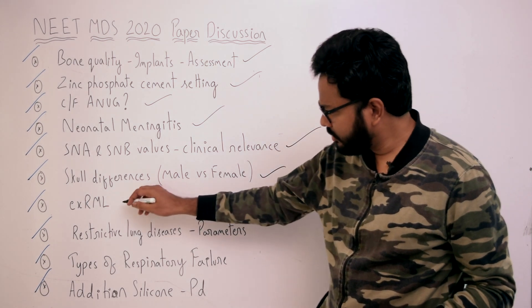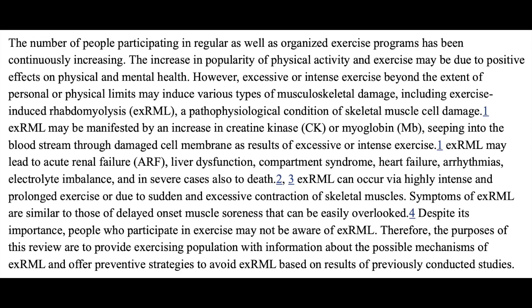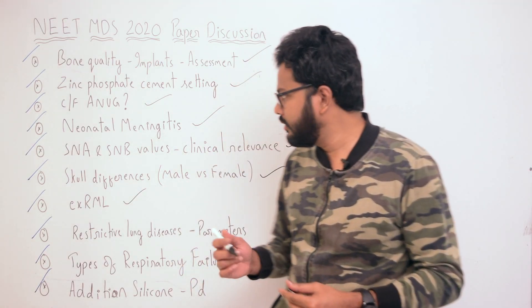The next question concerns exercise-induced rhabdomyolysis — there is likely a case-based question on this. Excessive or intense exercise beyond personal physical limits may induce musculoskeletal damage including exercise-induced rhabdomyolysis, a pathophysiological condition of skeletal muscle cell damage. There is an increase in serum creatine and myoglobin seeping into the bloodstream, which may lead to acute renal failure, liver dysfunction, compartment syndrome, heart failure, electrolytic imbalance, and in severe cases, death.